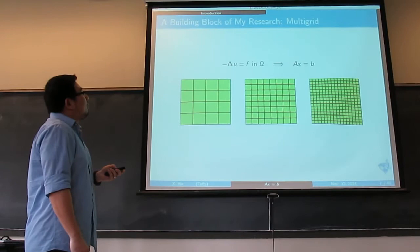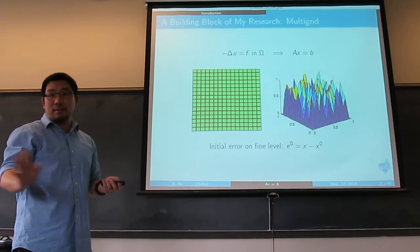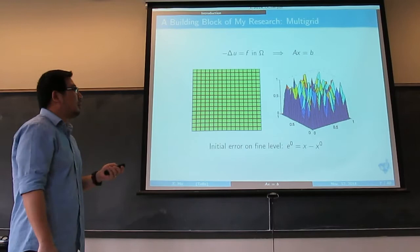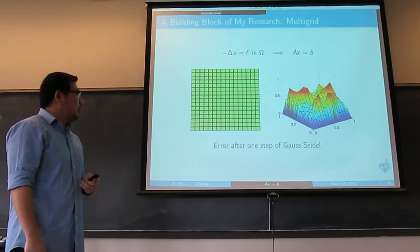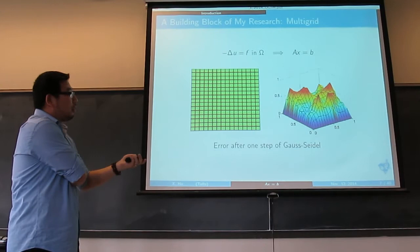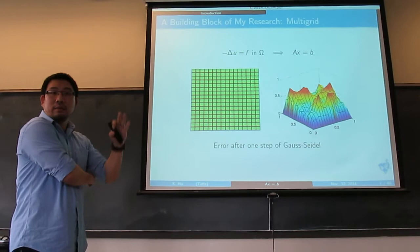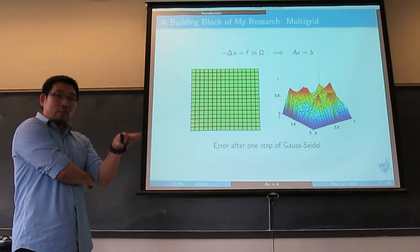How the multigrid goes is the following — it's an iterative method. Suppose I have an initial guess x_0. I plotted the error at the beginning: that's the initial error; you can see it's very oscillatory. What I do first is one step of Gauss-Seidel. You will see the magnitude of the error damps.